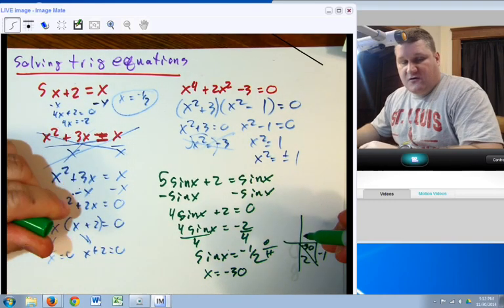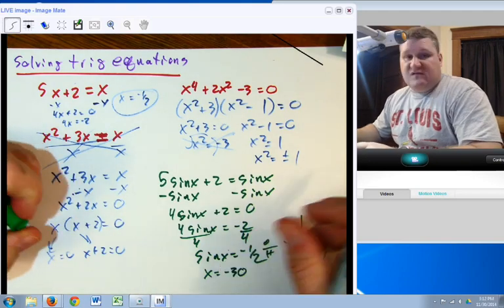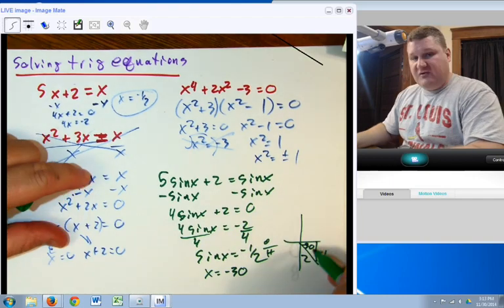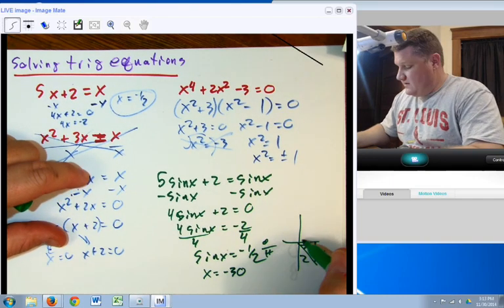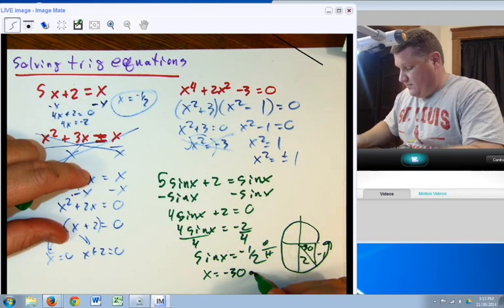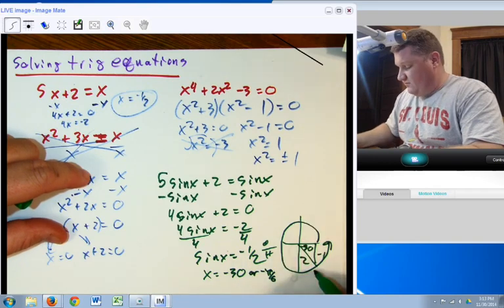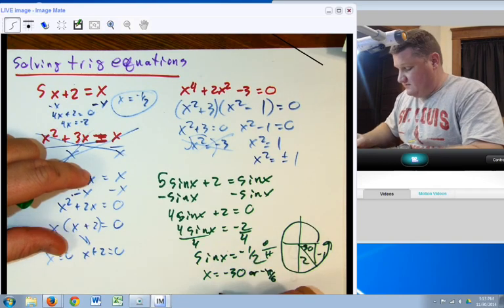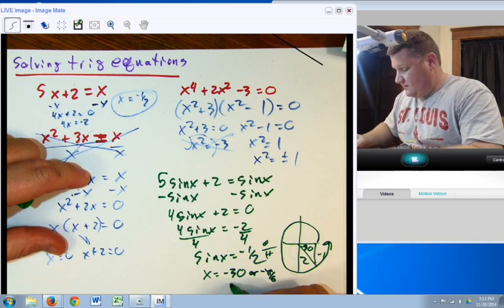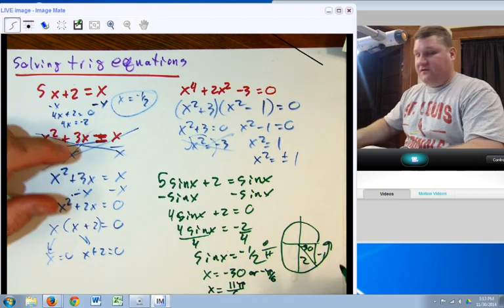In solving trigonometric equations, the directions may very well state, solve it between 0 and 2 pi. Well, if it's between 0 and 2 pi, that means it has to be from here to here, and negative 30 wouldn't work. Or, by the way, negative pi over 6. But, if I have to go around the positive direction, negative pi over 6 is the same thing as 11 pi over 6. So, x equals 11 pi over 6.